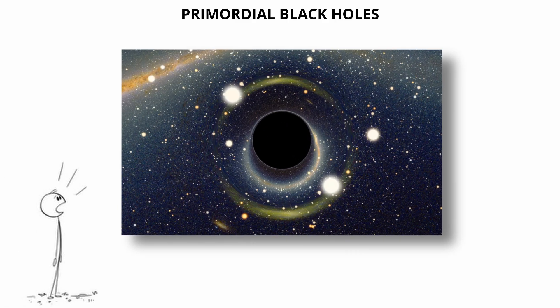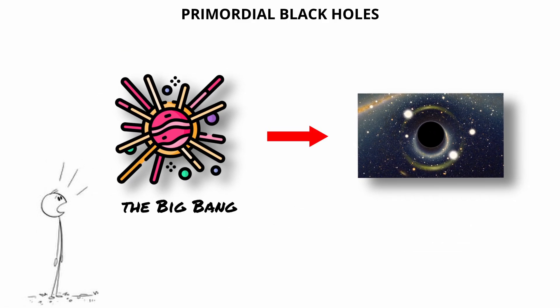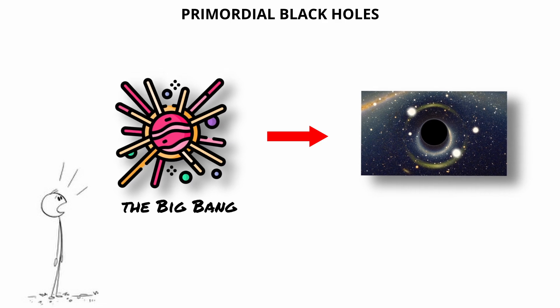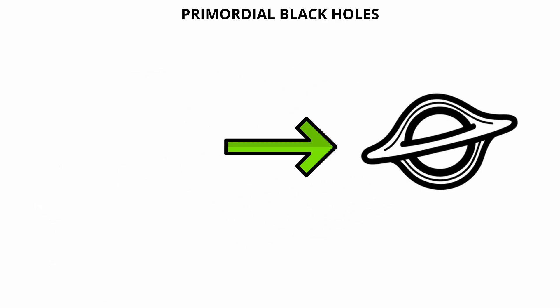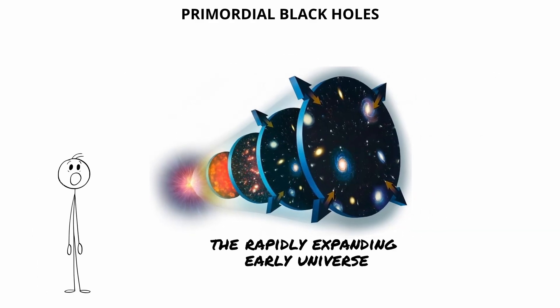Primordial black holes are hypothetical black holes that may have formed shortly after the Big Bang, during the earliest moments of the universe. Unlike other types, these black holes were not created by collapsing stars. Instead, they could have formed from extreme density fluctuations in the rapidly expanding early universe.